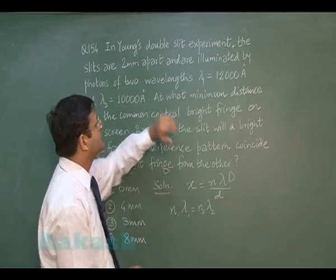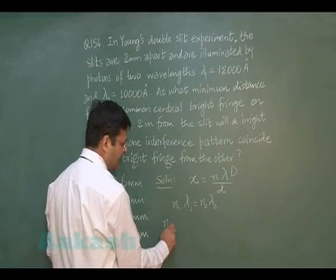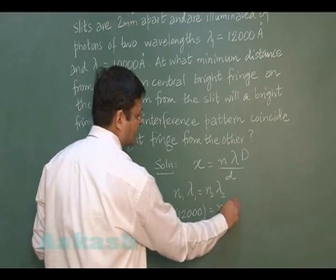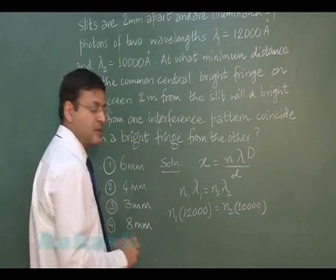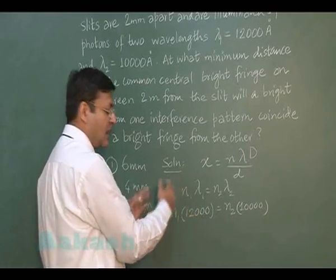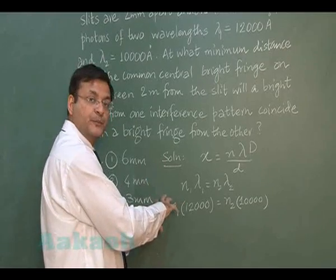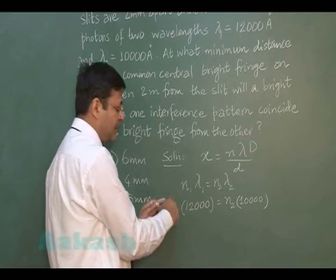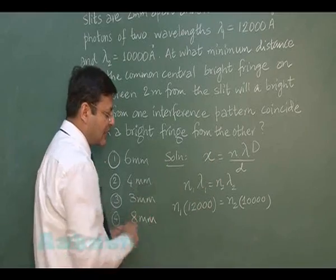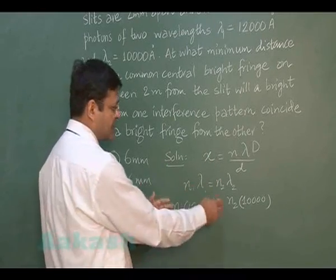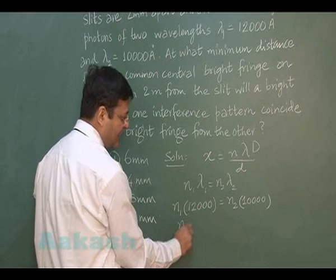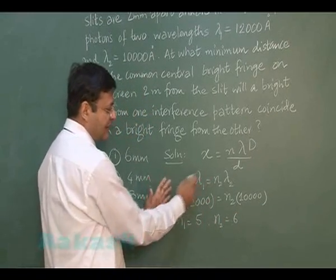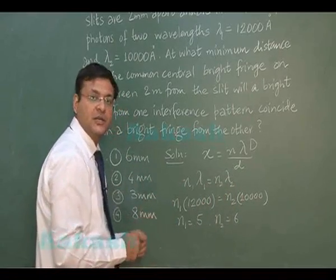One wavelength is 12,000 angstrom and another is 10,000 angstrom. Substituting: n1 × 12,000 = n2 × 10,000. For the minimum value, n2 will be just one higher than n1. Substituting n2 = n1 + 1 gives n1 = 5 and n2 = 6. The common product n·lambda comes out to be 60,000 angstrom.